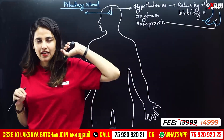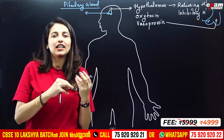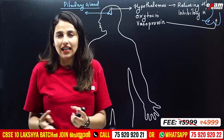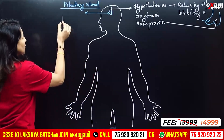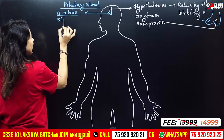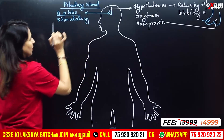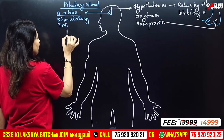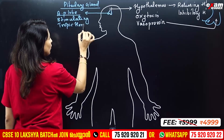The anterior lobe of the pituitary hormones are stimulated in the anterior lobe. These are called tropic hormones, because they have a stimulating effect on other glands.